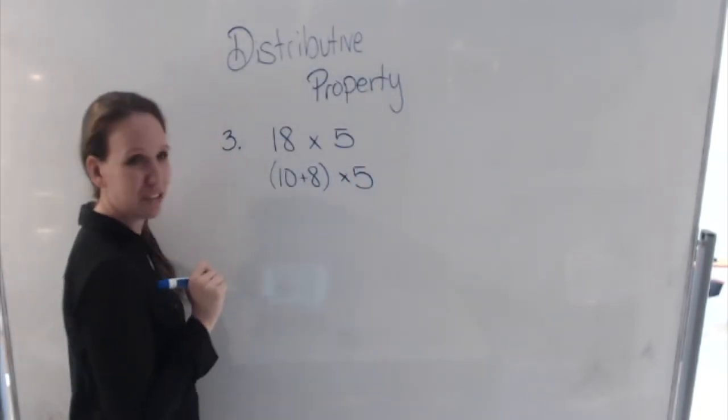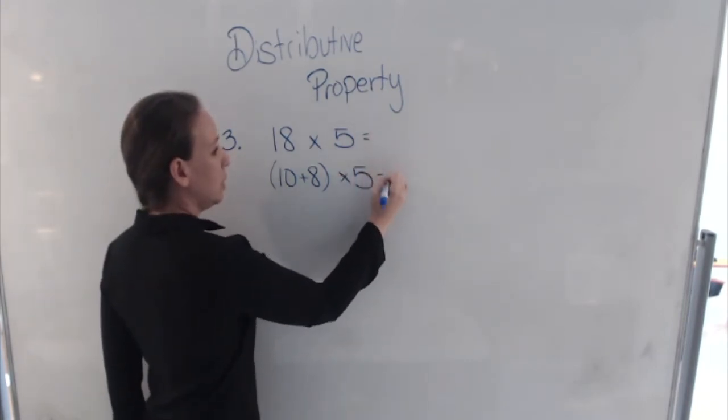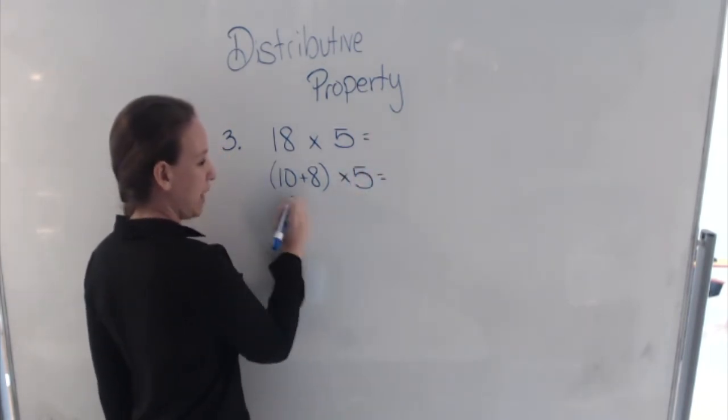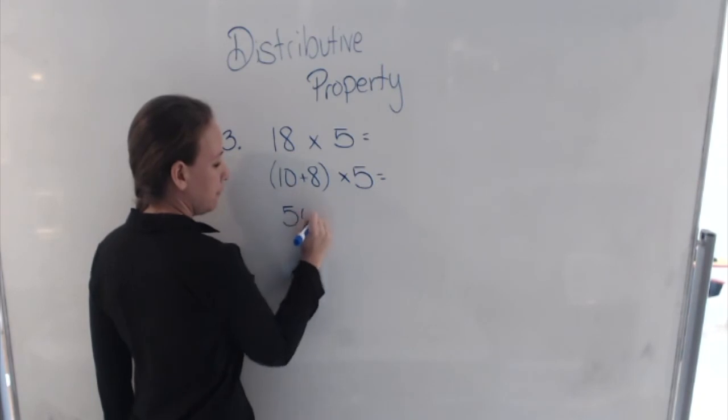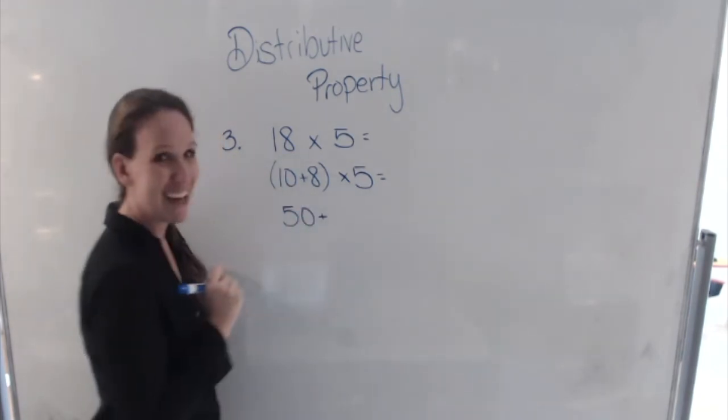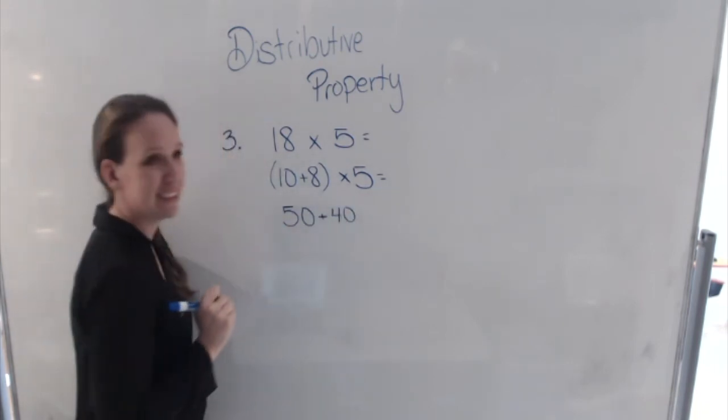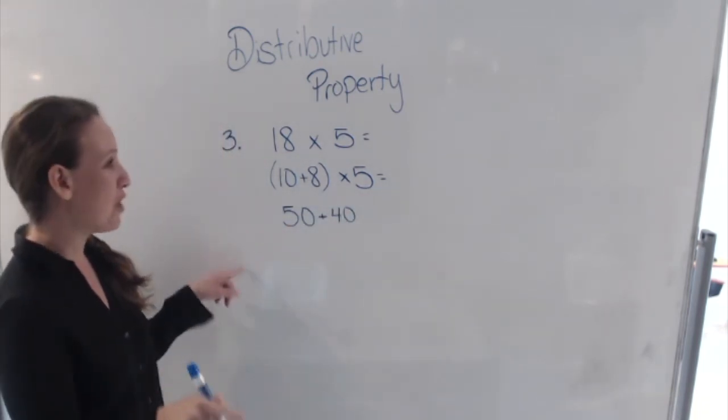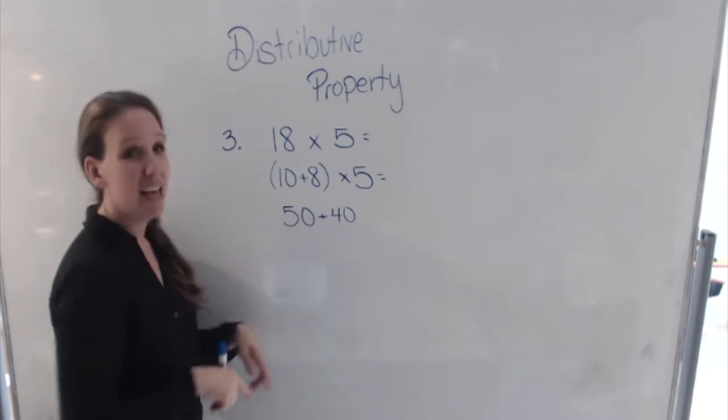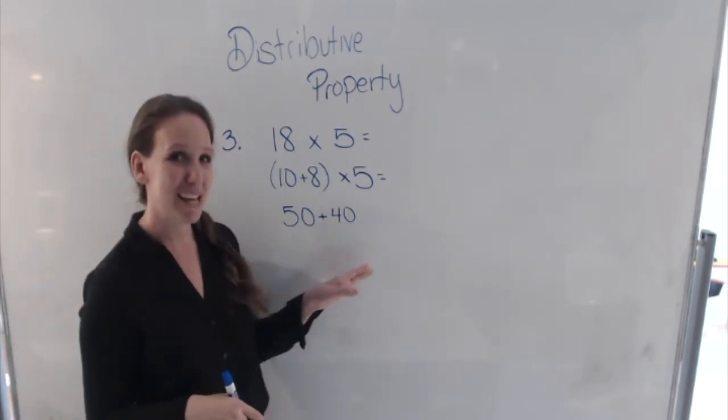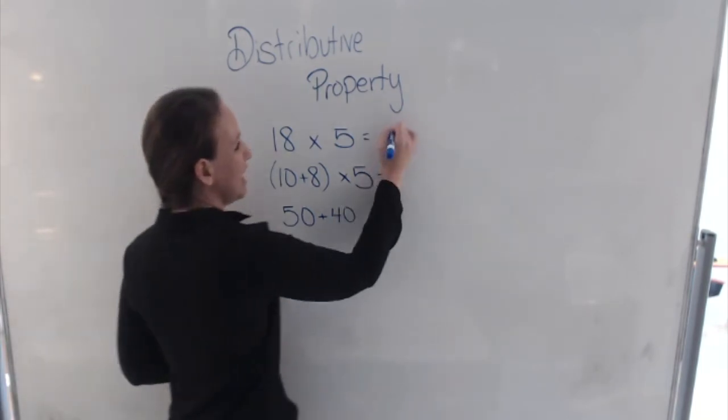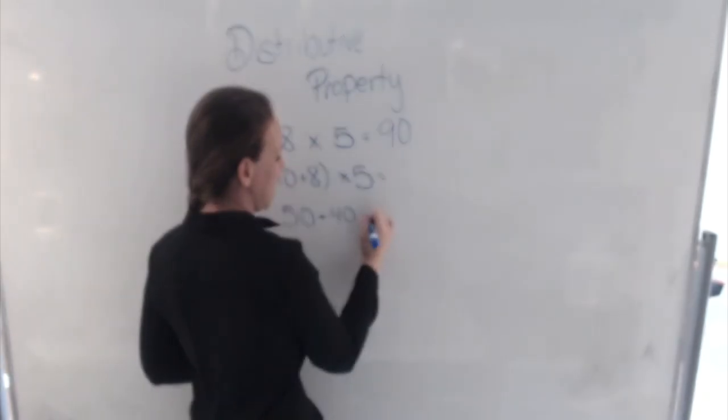So, 18 is 10 plus 8 times 5. And, just like before, we multiply 10 times 5, which is 50, plus 8 times 5, which is 40. And now we add those two numbers together. If I have 5 tens and 4 tens, that makes 9 tens or 90.